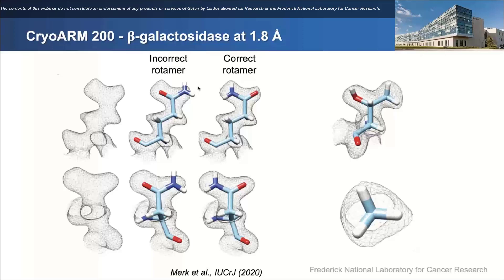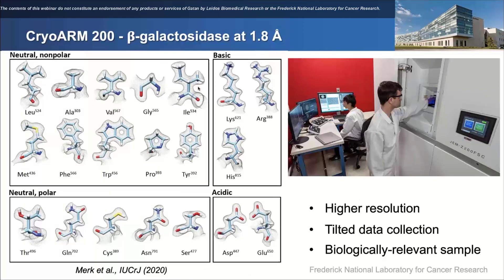In X-ray, programs are specifically designed to find NQ rotamers fitted incorrectly, and it's estimated about 20% are fitted incorrectly. Here in cryo with the hydrogen density, you can fit them just based on visual inspection with no ambiguity. Similarly, for the threonine side chain on the right, it's pretty clear which way to fit it. Here's a broader amino acid panel showing each of the 20 amino acids for the 1.8 angstrom beta-gal map — with hydrogens added to the model for all side chains, the density bumps clearly correspond to the locations of hydrogen atoms.